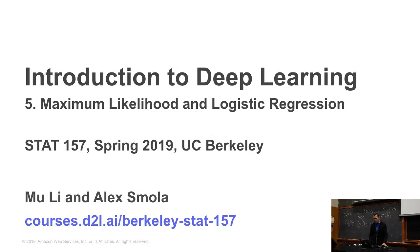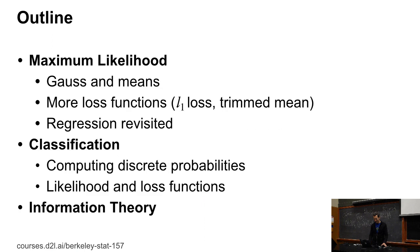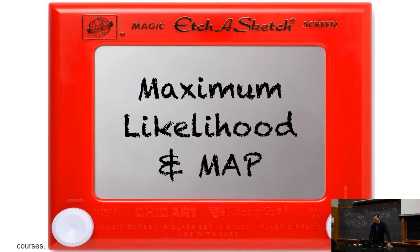So, logistic regression. The first thing we're going to do is we're actually going to go back to maximum likelihood and maximum a posteriori, just to motivate a little bit why on earth we had this weird least-mean-squares loss. So, maximum likelihood and maximum a posteriori.